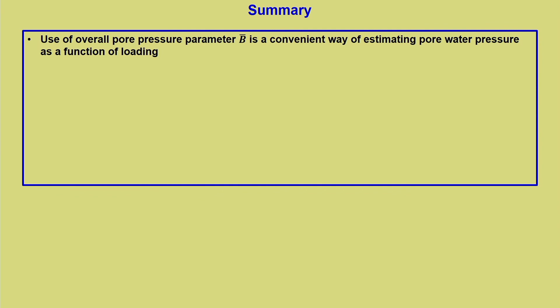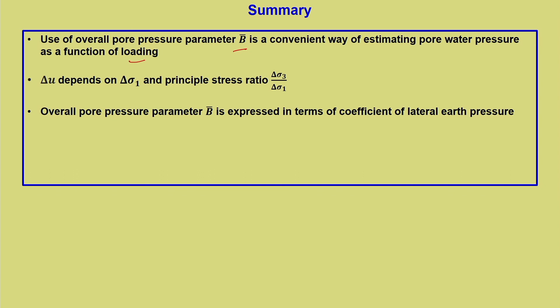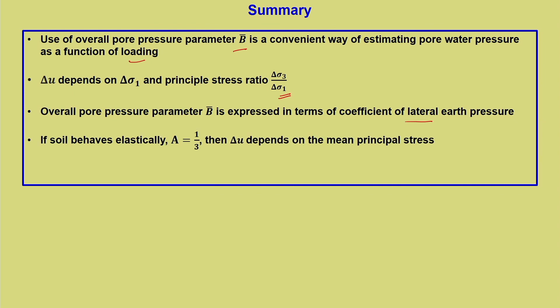In summary, the overall pore pressure parameter B-bar is a convenient way of estimating pore water pressure as a function of loading in a practical situation. Delta u depends on delta sigma 1 and the principal stress ratio delta sigma 3 / delta sigma 1. B-bar is expressed in terms of the coefficient of lateral earth pressure. If soil behaves elastically (a = 1/3), delta u depends only on mean principal stress; otherwise, deviator stress has significant influence. That concludes today's discussion on pore water pressure — one more section remains for the next lecture.